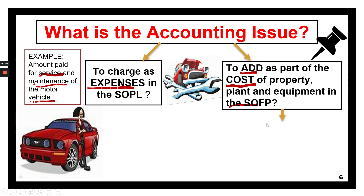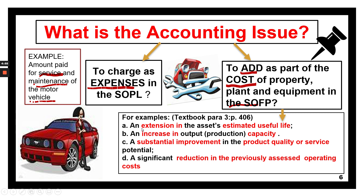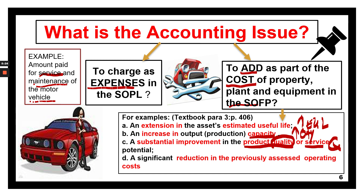MFRS 116 provides guidelines on what costs should be added to the PPE. Costs should be added if there is an extension to the estimated useful life, an increase in the output or capacity, a substantial improvement in the quality of the output, or a significant reduction in the previously assessed operating costs — where you can cut down operating costs significantly through the expenditure incurred on that particular PPE.